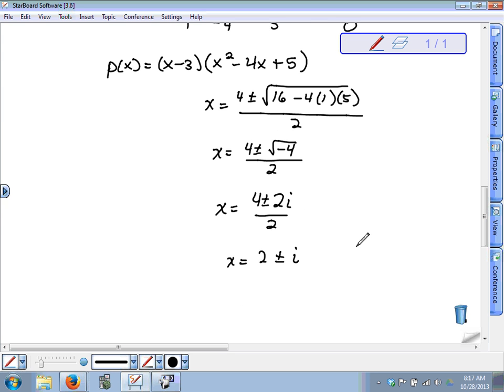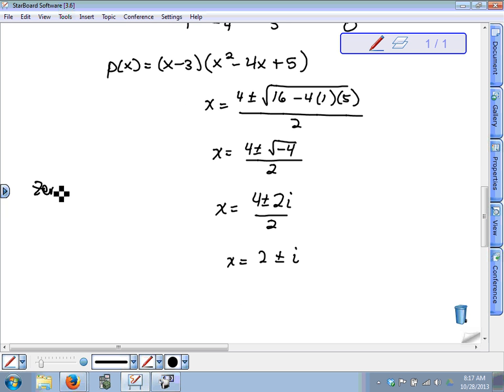So, here are the zeros. We found all three of them. One of them was the first one we found. x is equal to 3. The other two were complex. x equals 2 plus or minus i. So, that's the first part of what you're going to have to do on the test is find the zeros. The second part is to write the polynomial in its fully factored form. So, we have x minus 3.